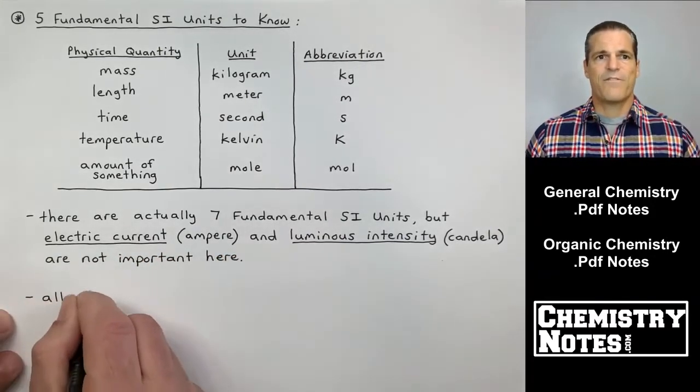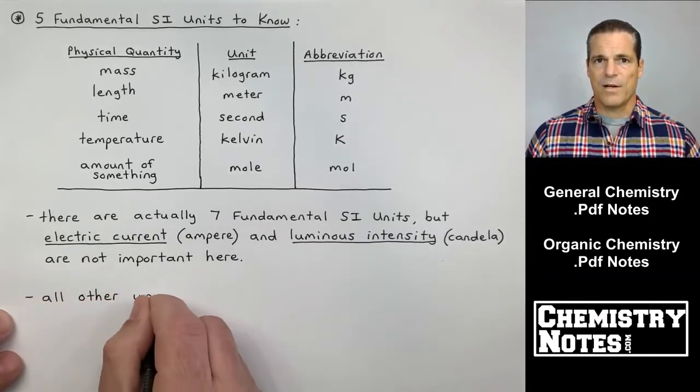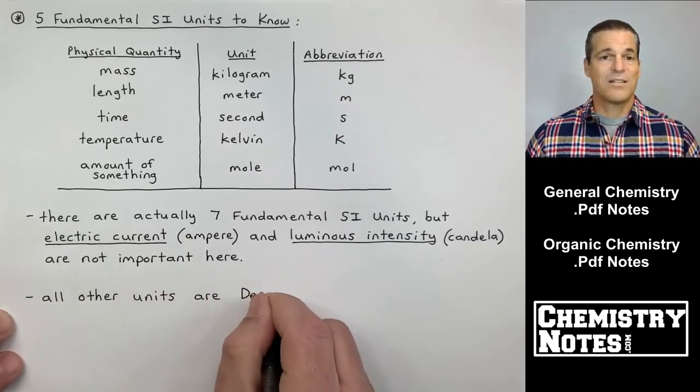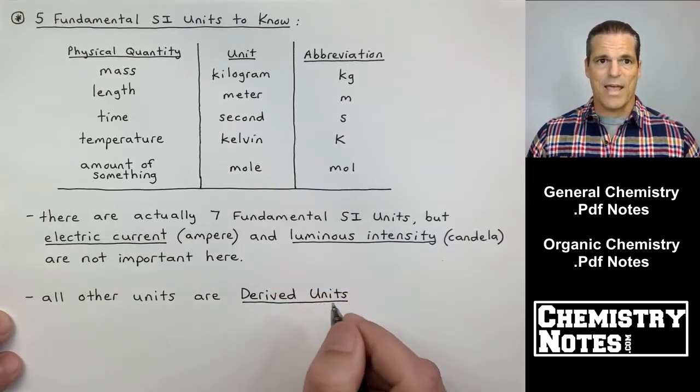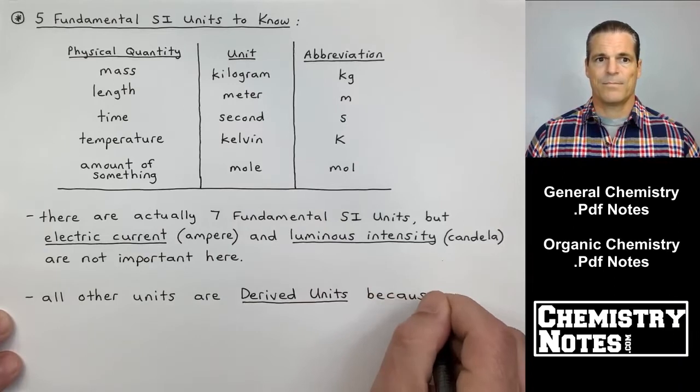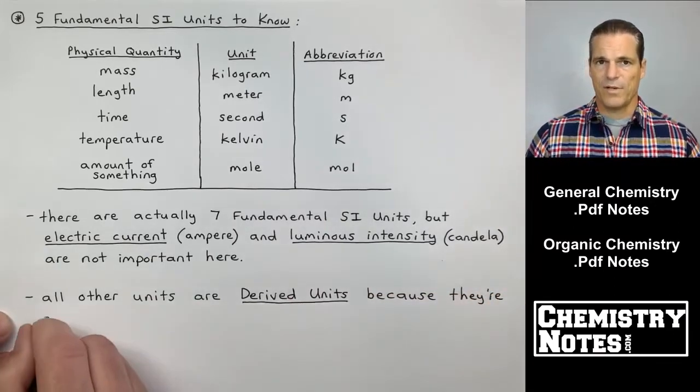So you got your five fundamental SI units. Those are my SI base units. I can get derived units from mixing and matching those base units. And that's what the second bullet point is referring to.